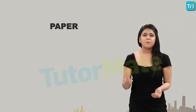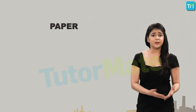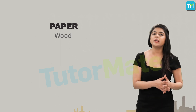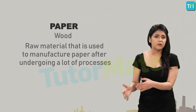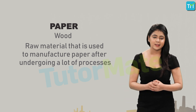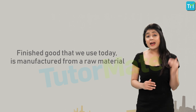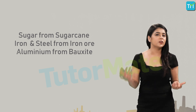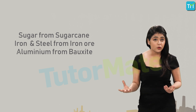As a student you use a lot of paper, but do you wonder what this paper is made up of? Paper is made of wood — wood is a raw material that is used to manufacture paper after undergoing a lot of processes. So every finished good that we use today is manufactured from a raw material. For example, sugar comes from sugarcane.